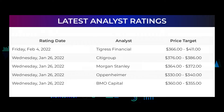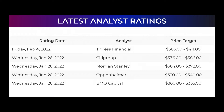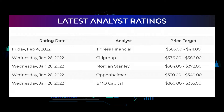Analyst ratings and price targets: On Friday February 4th, 2022, Tigris Financials set their target from $366 to $411. On Wednesday January 26th, 2022, Citigroup set their target from $376 to $386. Morgan Stanley set their target from $364 to $372. Oppenheimer set their target from $330 to $340. BMO Capital set their target from $360 to $355.